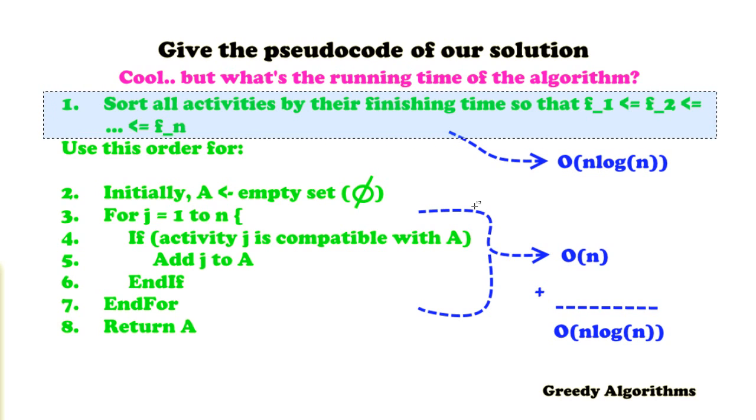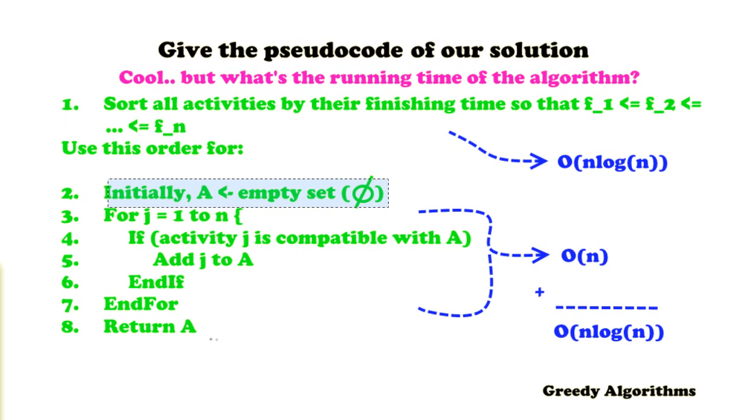Basically, we have two important parts within this pseudocode that could decide the upper bound. The first one is the sorting of the activities. In the best case, this can be done in n log n time, for example with a merge sort algorithm. Then we have this constant operation return as well. And the for loop itself is, in the worst case, an upper bound of O(n). So if you sum that all up, the tightest upper bound is O(n log n). So that's the worst case upper bound.